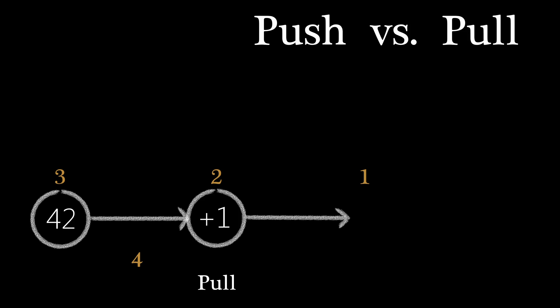The increment node now has all the data it needs to execute, so it puts the new value, 43, on its output, and we're done.